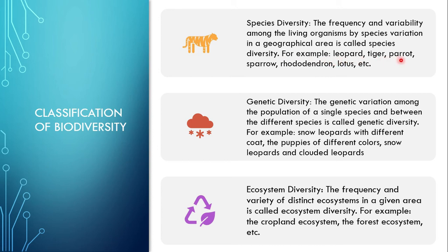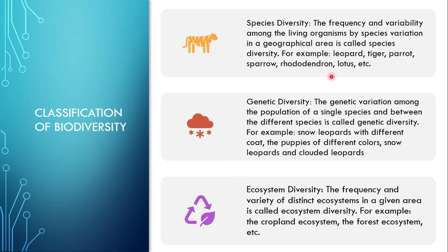For example: leopard, tiger, parrot, sparrow, rhododendron, lotus — these are different species. There is variation between leopard and tiger, between parrot and sparrow, between leopard and rhododendron. This is called species diversity. So the frequency and variability among living organisms by species variation — leopard, tiger, parrot, sparrow, rhododendron — these are all different species of animals and plants.